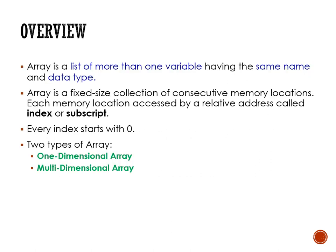So what is array? Array is a list of more than one variable having the same name and data type, meaning we can store multiple values in a single declaration. Array is a fixed-size collection of consecutive memory locations, each accessed by a relative address called index or subscript, and the index must start with zero. There are two types: one-dimensional array (1D array) and multi-dimensional array.